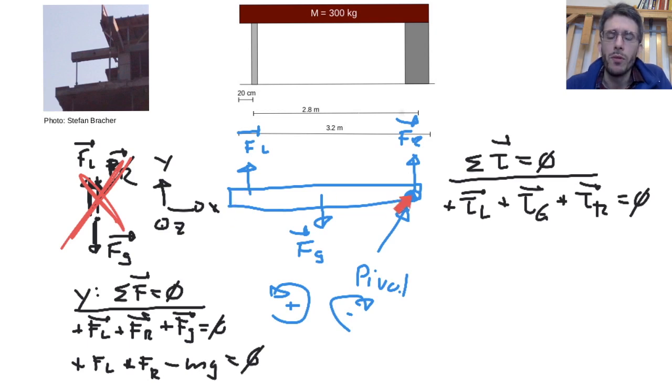My left force, if my beam would be hinged here, and this was allowed to push it up, there's no other force, would turn it in clockwise direction. Therefore, I'm getting minus the torque from the left.